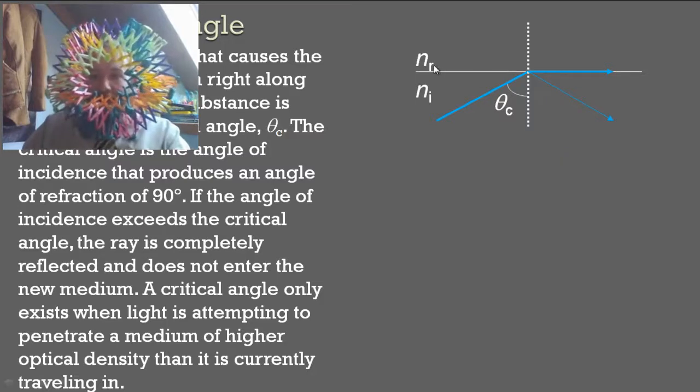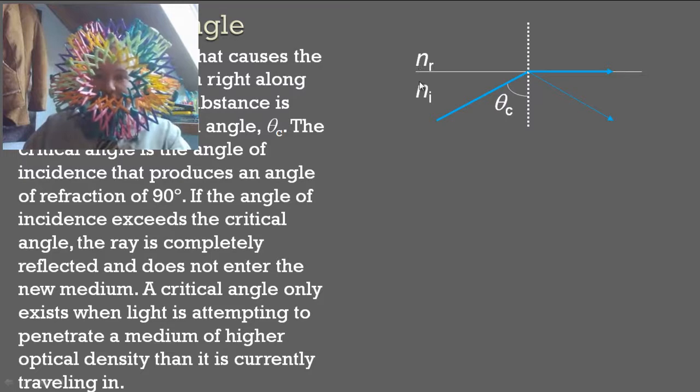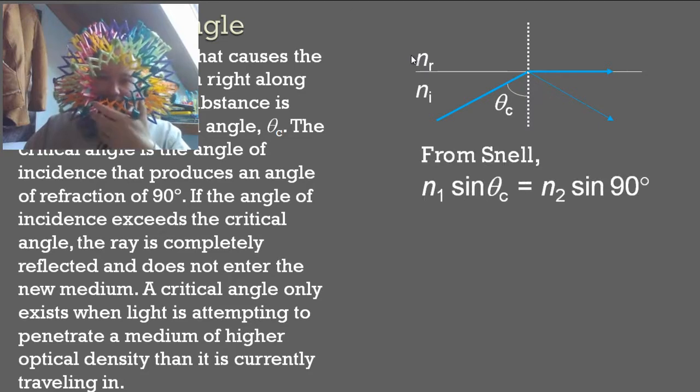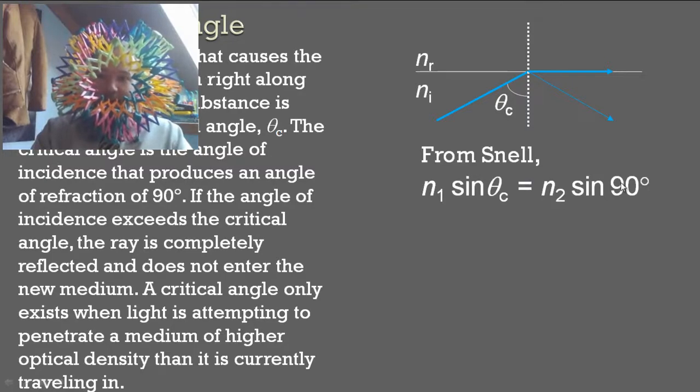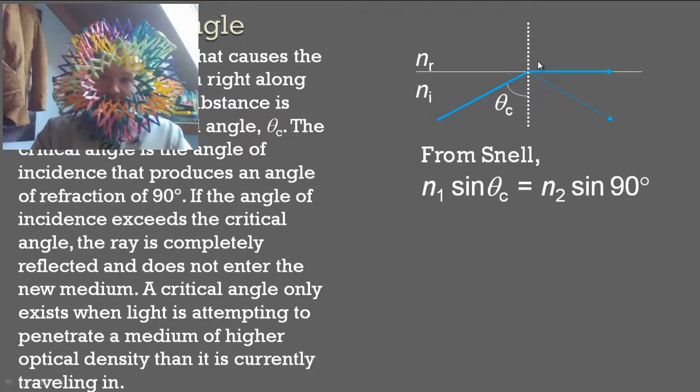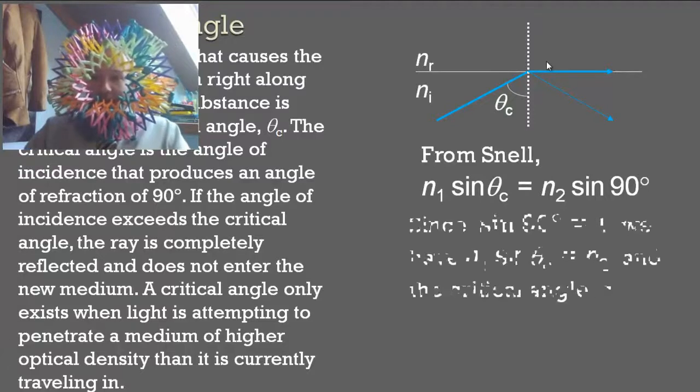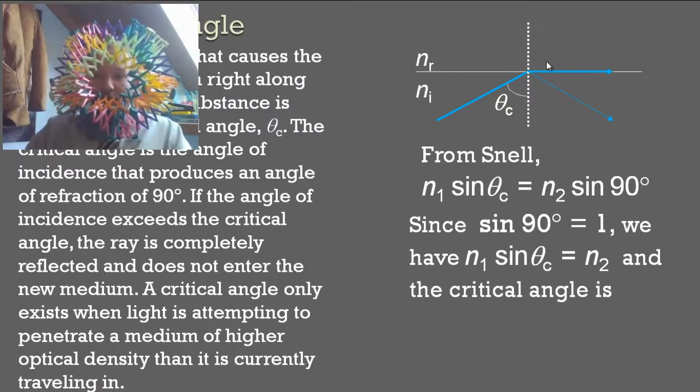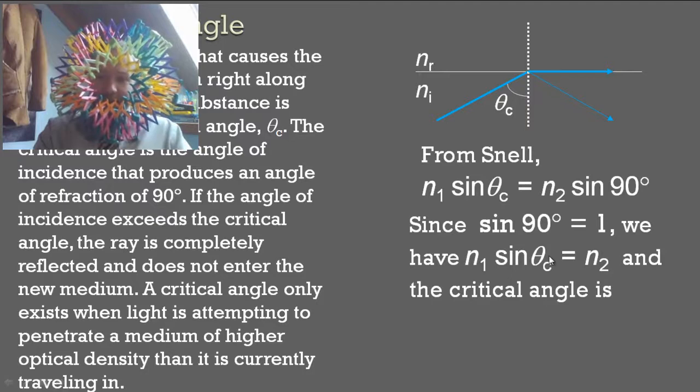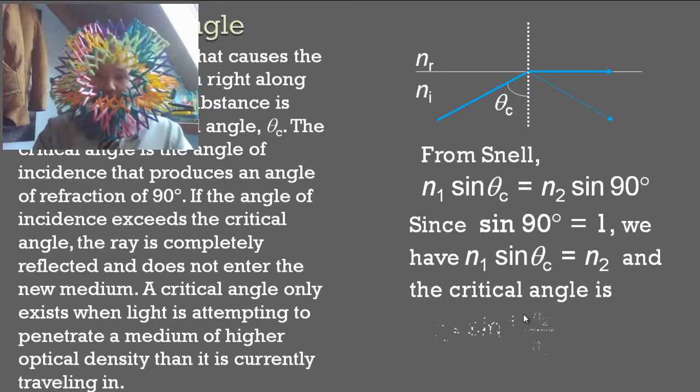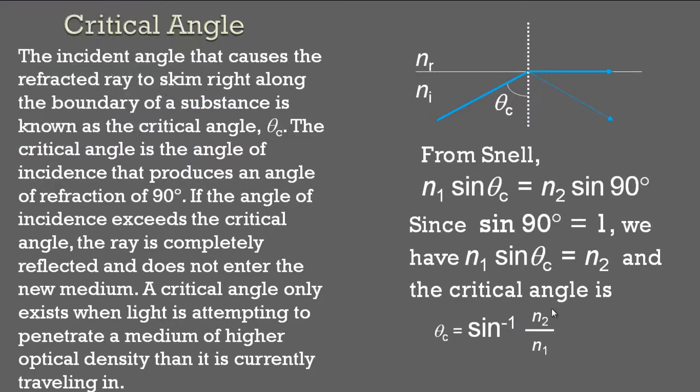A critical angle only exists when light is attempting to penetrate a medium of higher optical density than it is currently traveling in. That would mean that Nr has to be bigger than Ni, it has to be higher density. From Snell's law, we have the index of refraction, which is inside this medium, which is Ni in this case, times the sine of the critical angle. Nr equals N2 sine of 90. Because we know that the refractive angle of this guy is 90 degrees. Since sine of 90 equals 1, we can just get rid of this guy. And we just have N1 sine of theta c equals N2. And solving for the critical angle, you get the critical angle equals the inverse sine of N2 over N1.